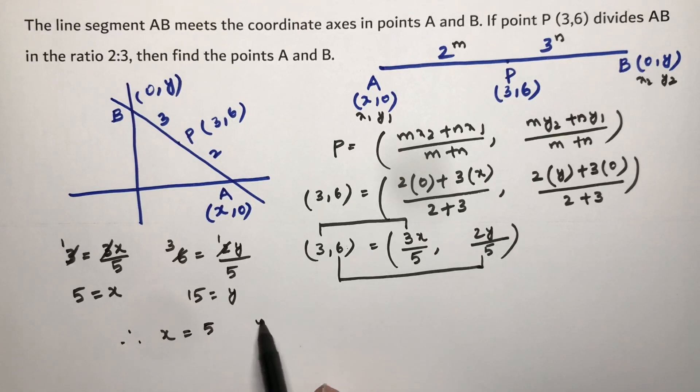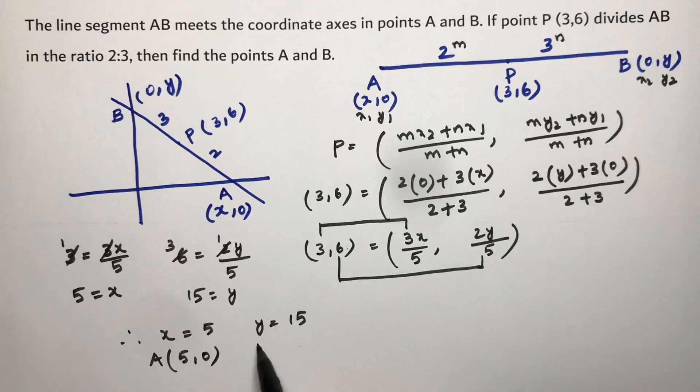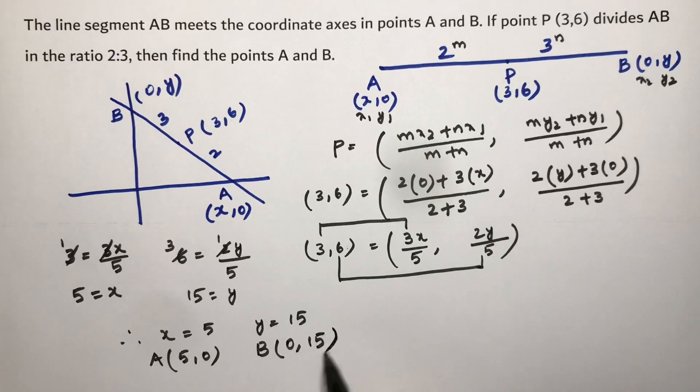x is 5, y is 15. So point A is (x, 0), which is (5, 0). And point B is (0, y), so (0, 15).